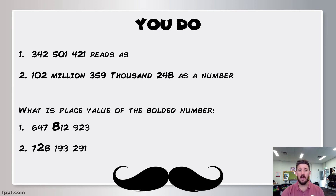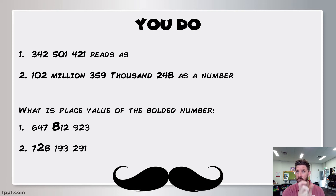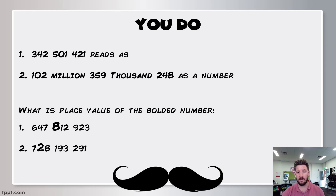Okay, we're up to the you-do — the part where you stop the video and have a go yourself. The first two are read and write questions. The first one asks you to tell me how it would read — remember, split it up into groups of three and label each group. That will let you read the three numbers and then say the name of the group. The second one is where you have to put it as a number — just take out the group names and write it without any words. And the second question asks you to identify the place value of the bolded number. Stop the video now and have a go.